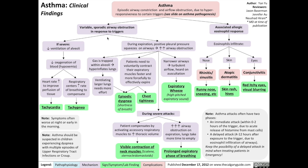Back to the airway obstruction. During expiration, the positive pleural pressure squeezes on the airways, which worsens airway obstruction. The worsening airway obstruction leads to gas trapping within the alveoli, which hyperinflates the lungs, resulting in the body requiring more effort to ventilate these larger lungs. Similarly, patients need to voluntarily contract their expiratory muscles faster and more forcefully to expire effectively. This results in episodic dyspnea, as well as chest tightness.